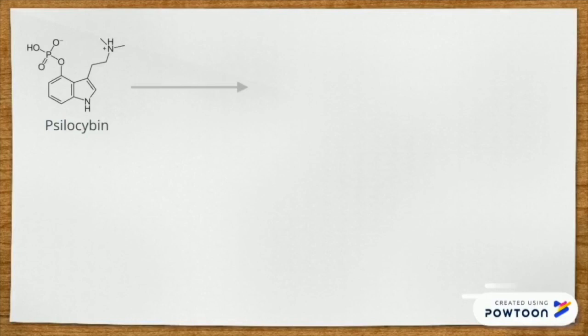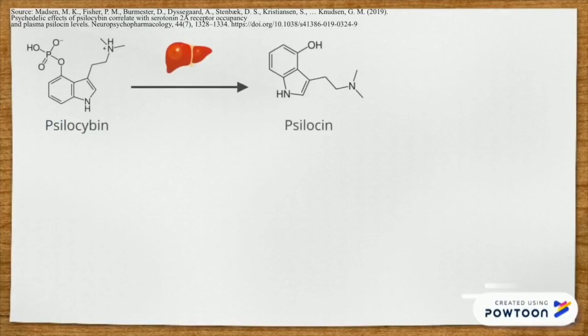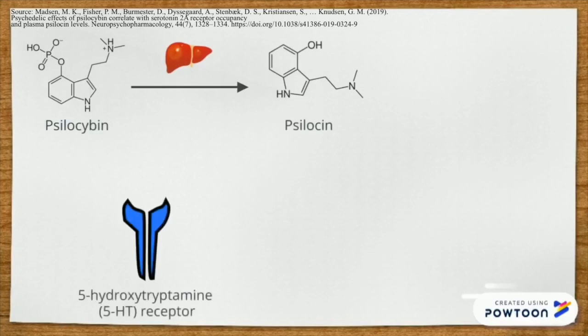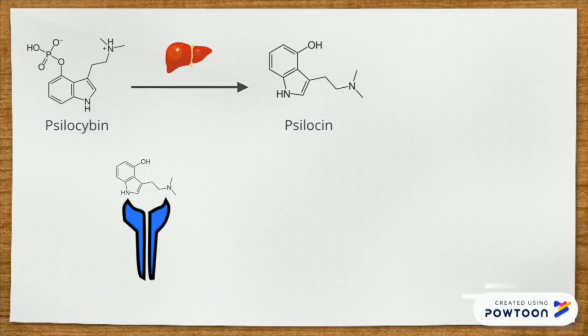When magic mushrooms are ingested, the liver quickly metabolizes psilocybin into psilocin, which is a partial agonist of several serotonin receptors known as 5-hydroxytryptamine or 5-HT receptors. In simple terms, this means that psilocin mimics serotonin and binds to serotonin receptors on our brain cells. LSD also binds to the same group of receptors.